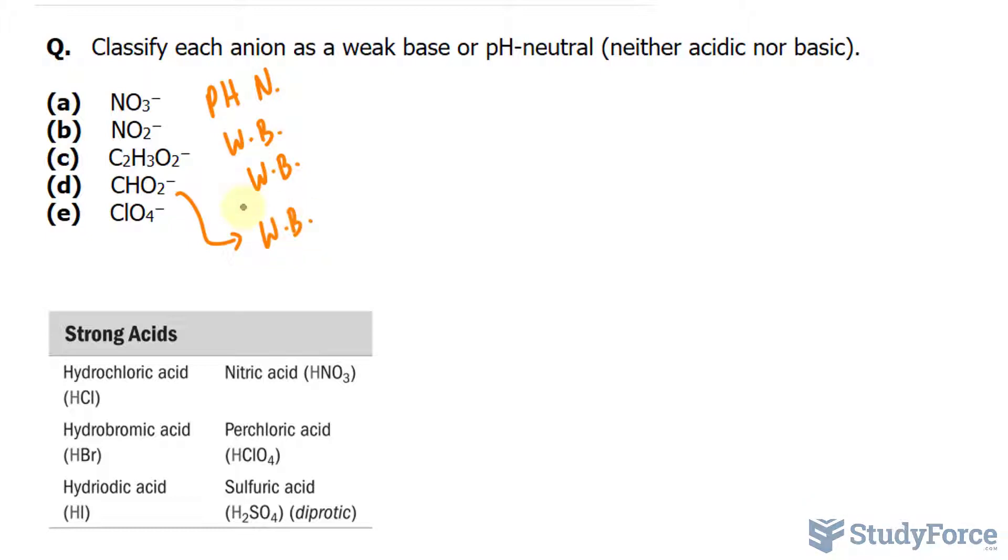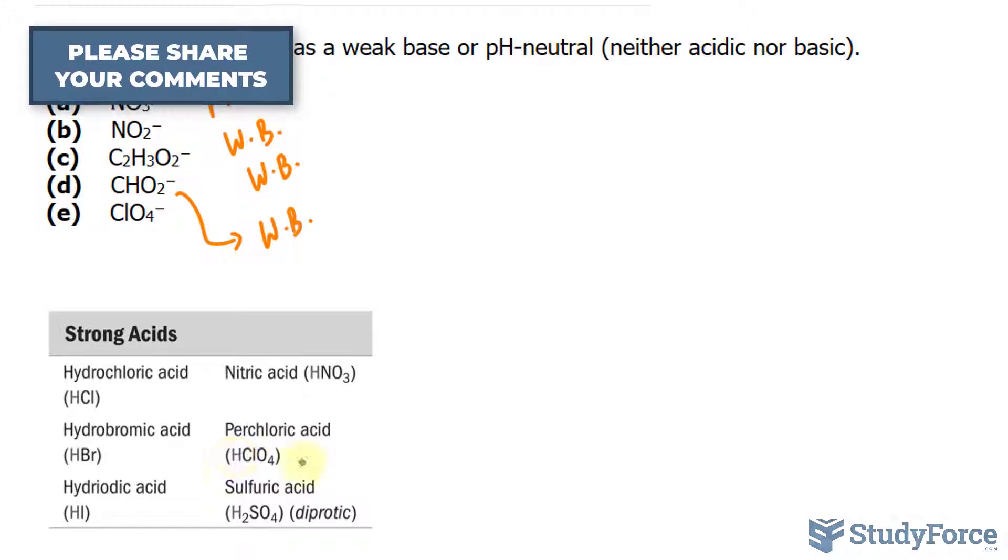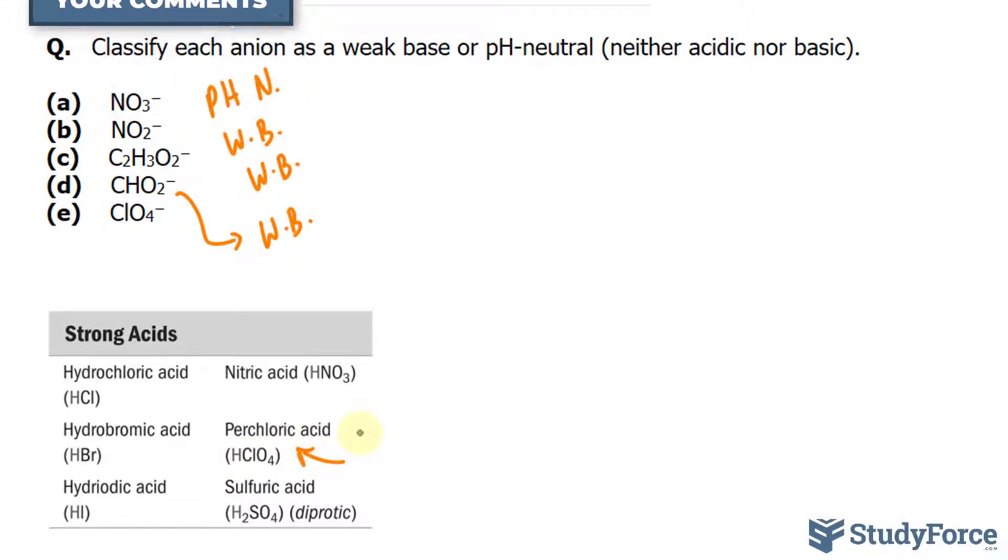And finally, ClO4-, the derivative of this anion is perchloric acid, having the formula HClO4. Because it's coming from a strong acid, this molecule completely dissociates, forming a pH-neutral derivative as ClO4-, so this is pH-neutral.